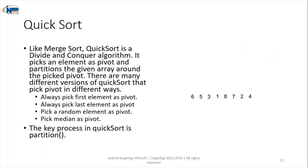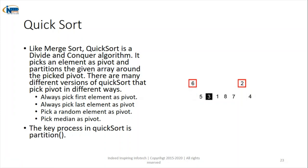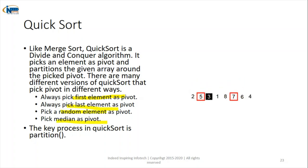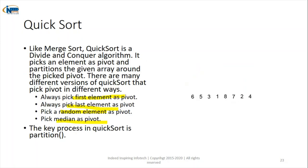Similar to merge sort, we have quick sort. The key difference is that in quick sort we select a pivot. You can select the first element, the last element, a random element, or the median as pivot. In merge sort we did not select any pivot for dividing, but here we select a pivot for dividing and then perform the sorting. Quick sort is also a divide-and-conquer algorithm.